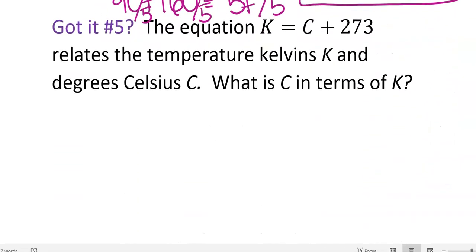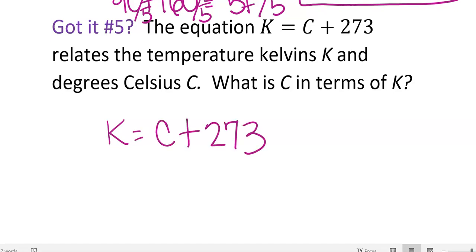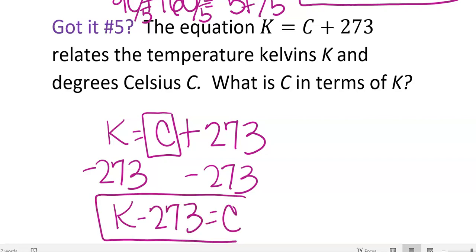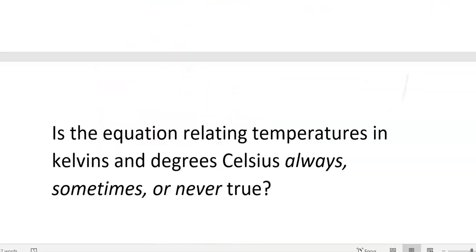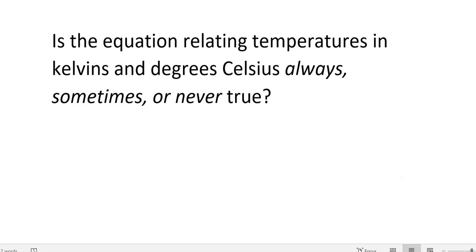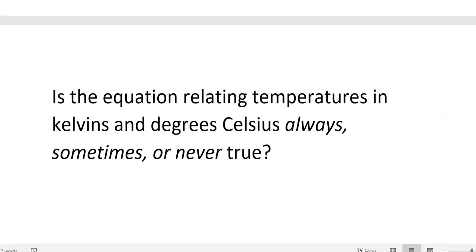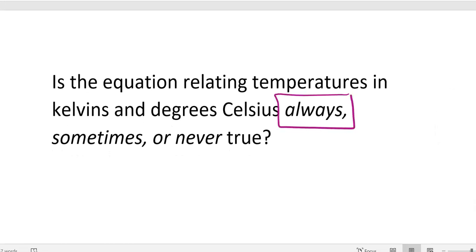Pause the video and try 'got it' question number 5. The equation K equals C plus 273 relates temperature in Kelvin (K) and Celsius (C). What is C in terms of K? This one is much easier — just subtract 273 from both sides: C equals K minus 273. Those two equations are the same. Is the equation relating Kelvin and Celsius always, sometimes, or never true? They are exactly the same equation just represented differently, so they will always be true.